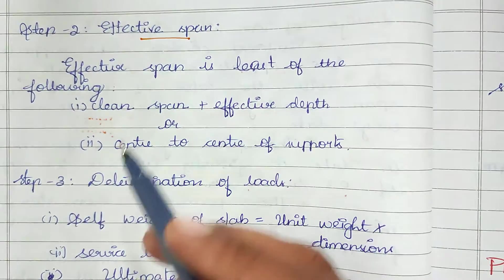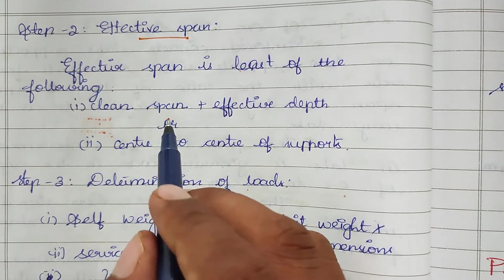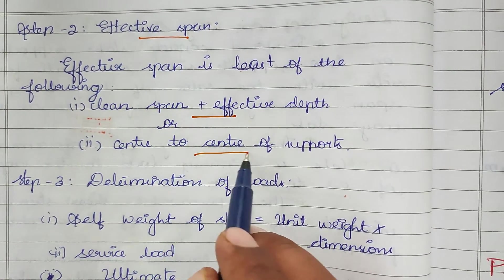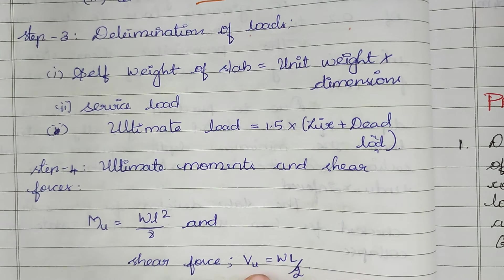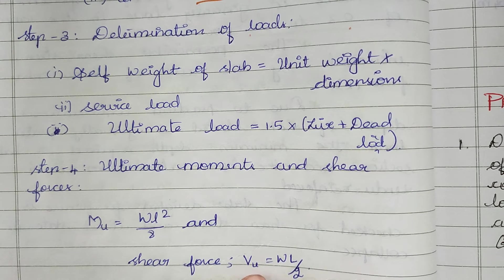Step 2 is effective span. The effective span is the least of the following: clear span plus effective depth, or center to center of the supports. After the determination of loads, there are two types: self weight and live load.